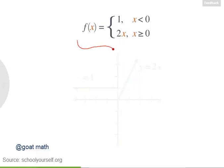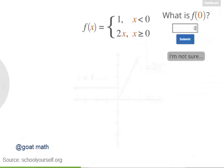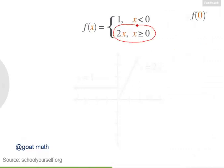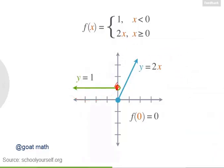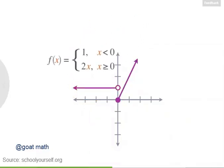According to the definition of this piecewise function, what is f of 0? Because x equals 0 is in the lower piece, f of 0 equals 2 times 0, which is 0. The way to show that f of 0 equals 0 and not some other number is to put a filled-in circle at this point. So f of x equals 2x when x equals 0 and at all x coordinates greater than 0. For the line y equals 1, we put a hollow circle when x equals 0, showing that f of x equals 1 when x is less than 0, but not when x equals 0. So here's the graph of this function f of x.